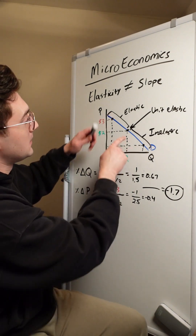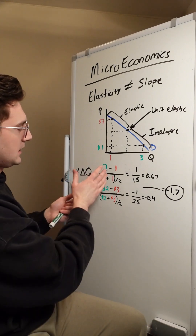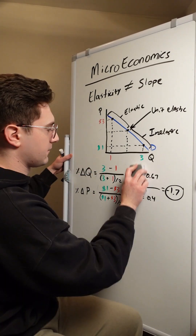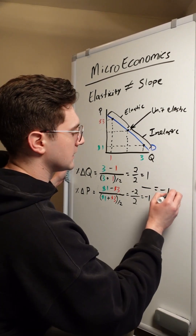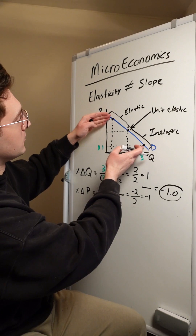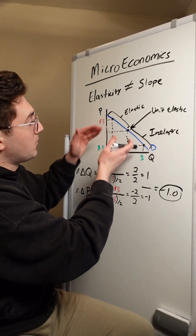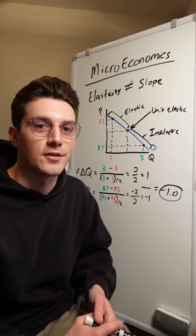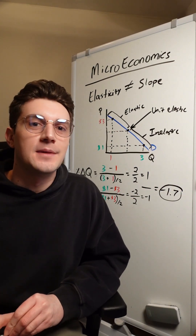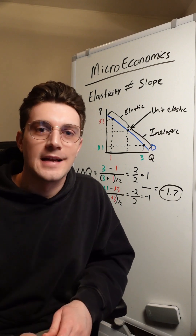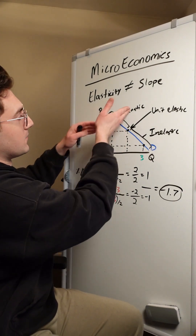Let's try this again with our midpoint at the unit elastic point. I'll change the green point to a new location so the midpoint lands there. Updating the green values in the midpoint method formula and solving, I get this value for the numerator and this for the denominator. Dividing gives negative 1.0 as our price elasticity of demand — which makes sense, because a price elasticity of demand of negative 1 means unit elastic, and that's exactly where the midpoint falls on the curve.